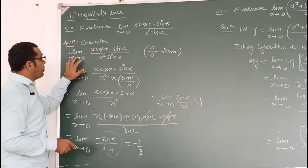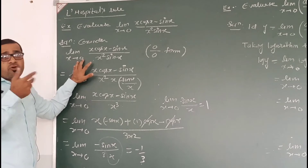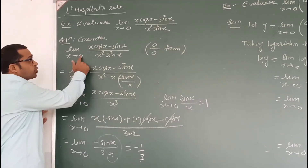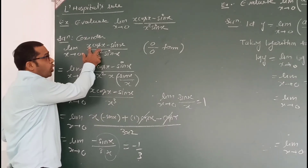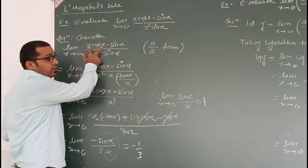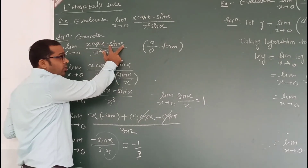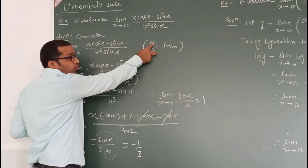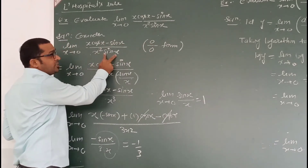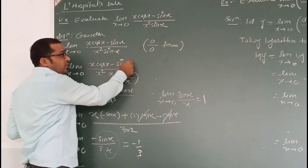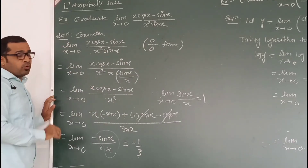Now we will put x equals to 0 and see which form we get. If I put x equals to 0: x is 0, cos0 is 1, sin0 is 0 — so the numerator is 0. Then again x is 0, sin0 is 0 — so the denominator is 0. This is 0 by 0 form.